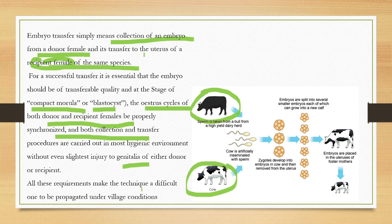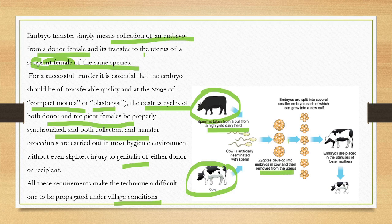All the equipment makes the technique difficult to perform under village conditions. Sperm is taken from a bull from a high-yield dairy herd. The cow is artificially inseminated and the fertilized eggs develop into embryos, which are then removed from the uterus. This removed structure is a blastocyst.